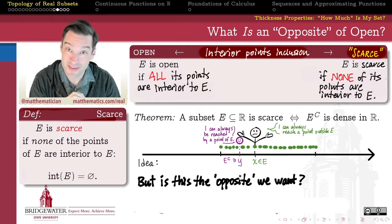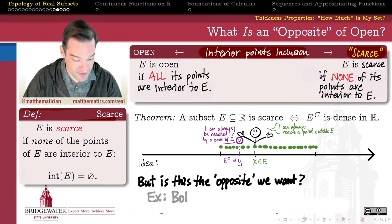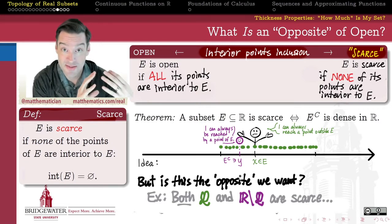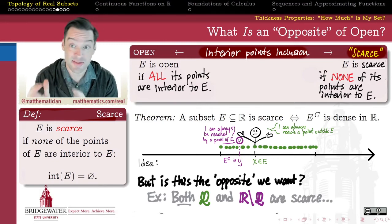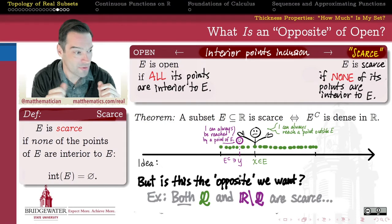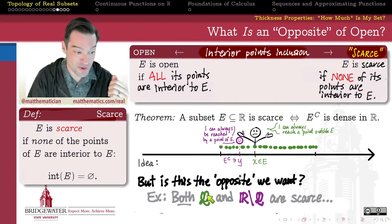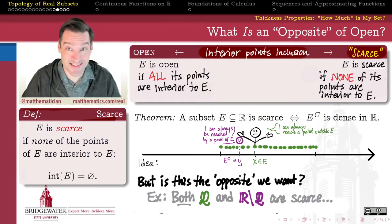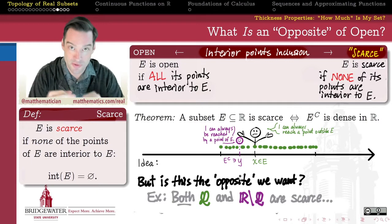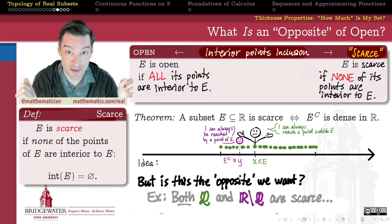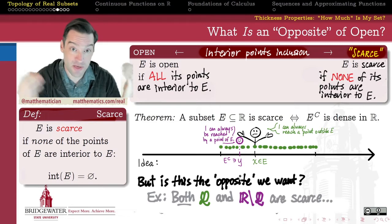Is this really the opposite we're looking for? Both the rational numbers and the irrational numbers as subsets of the reals are scarce sets — both have empty interior. There is no open interval of the real line consisting entirely of rationals, and none consisting entirely of irrationals. But if I take the union of these two scarce sets, I get the entire real line, which is not scarce at all — it contains a ton of open intervals. So scarceness can be destroyed even in the union of just two scarce sets.